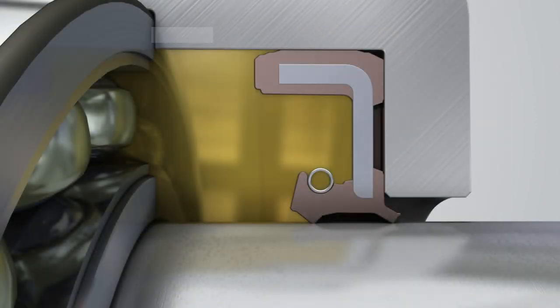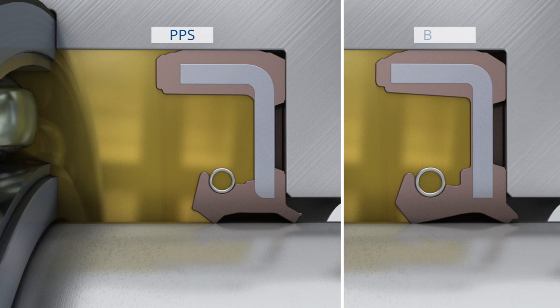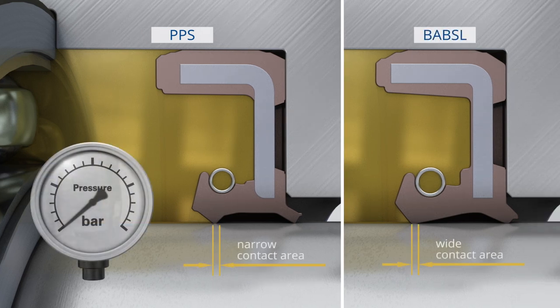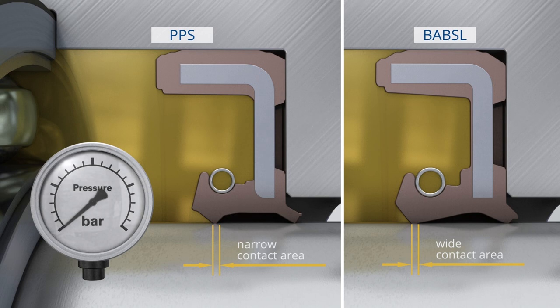The premium pressure seal, PPS, is the solution for higher pressure ranges. Like the BABSL, the PPS has a short and stiff sealing lip. The patented sealing lip profile of the PPS has a smaller contact surface to the shaft under pressure compared to the standard pressure seals.